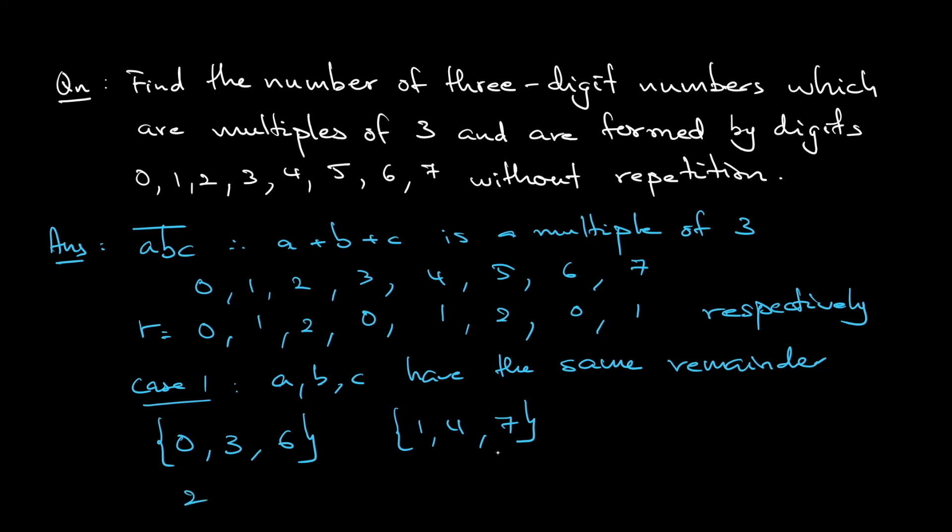So you can start with either 3 or 6, so that's 2 choices. After that, you still have 2 choices - you do not repeat, but now you can use 0. And of course, the last digit is 1 choice, so it's 4. For this case, no restriction, just 3 times 2 times 1, so it's 6. Total is 10 for case 1.